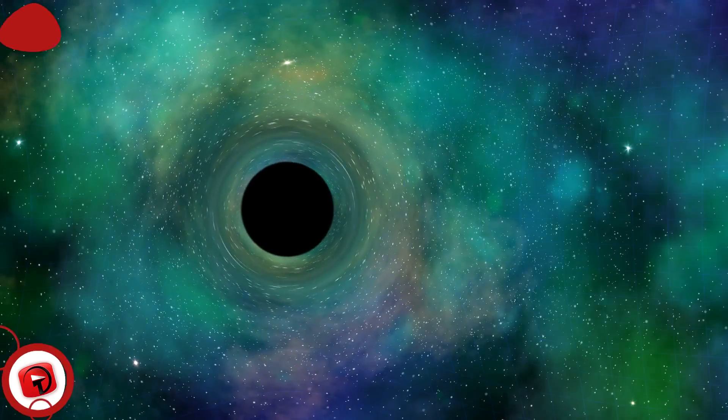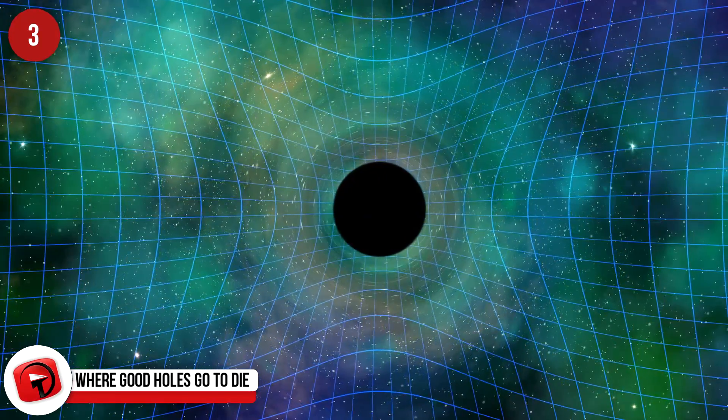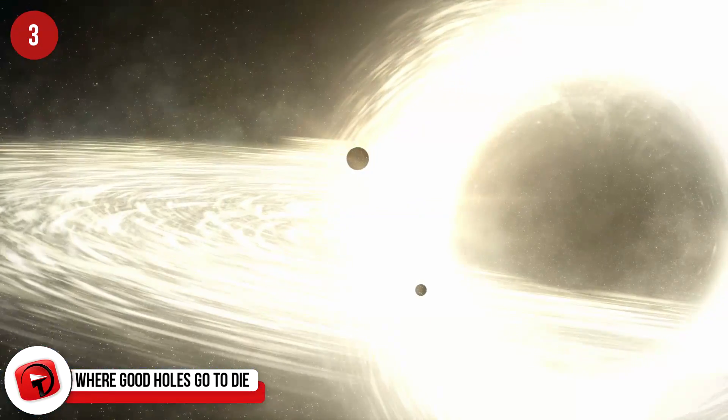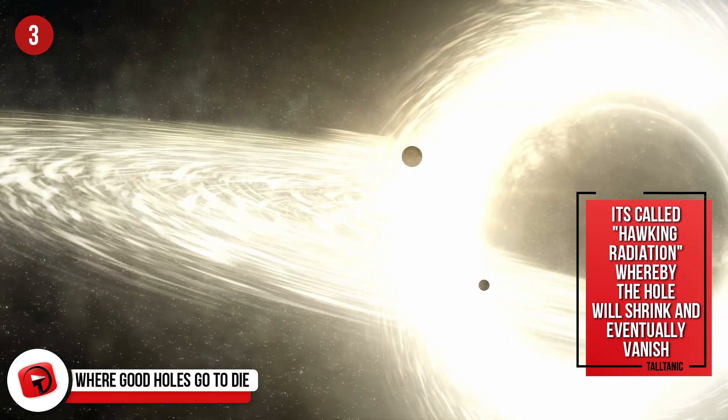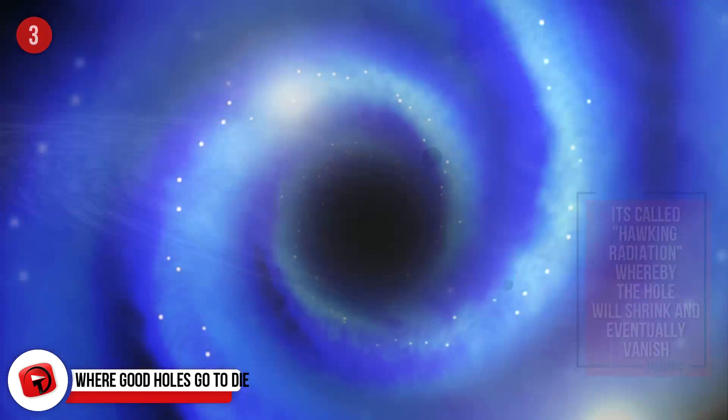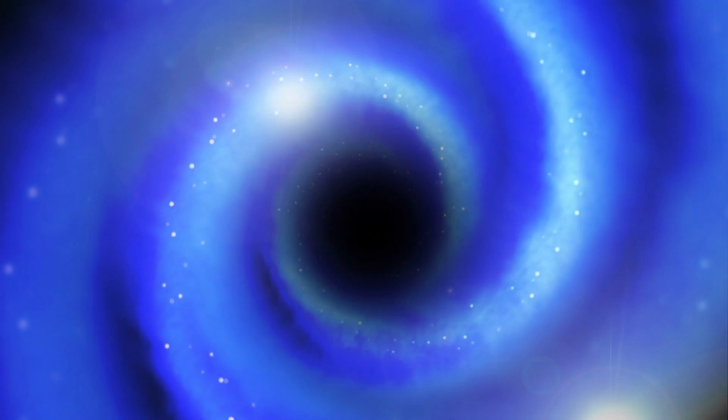Where good holes go to die. Black holes do have a timeline, and over time, they do disappear or evaporate. They radiate a small number of photon particles, meaning the black hole does lose mass. It's called Hawking radiation, whereby the hole will shrink. The process is mind-blowingly slow and could take billions of years to do, so it'll never happen in my lifetime.